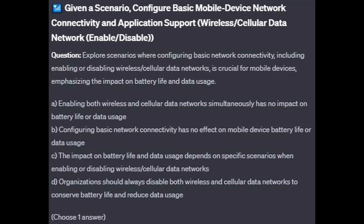Question number 5. Explore scenarios where configuring basic network connectivity — including enabling or disabling wireless or cellular data networks — is crucial for mobile devices, emphasizing the impact on battery life and data usage. Is it A: Enabling both wireless and cellular data networks simultaneously has no impact on battery life or data usage? Is it B: Configuring basic network connectivity has no effect on mobile device battery life or data usage? Is it C: The impact on battery life and data usage depends on specific scenarios where enabling or disabling wireless or cellular data networks. Or is it D: Organizations should always disable both wireless and cellular data networks to conserve battery life and reduce data usage?